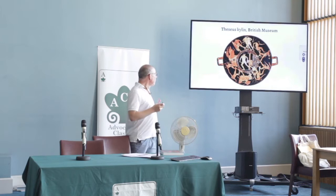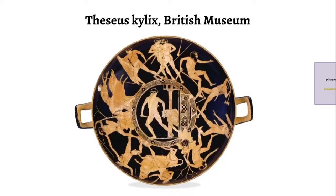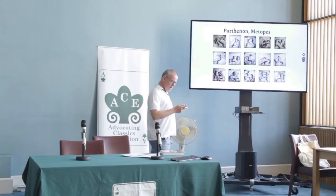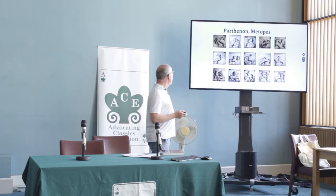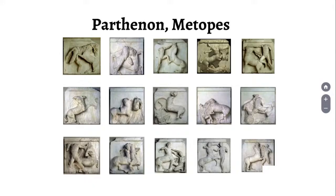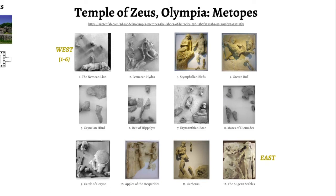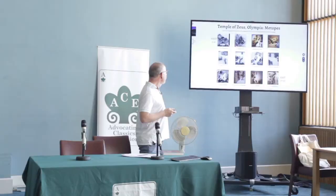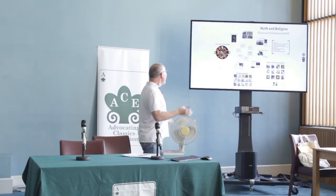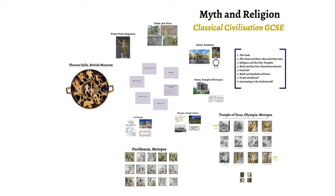There are three more visual things: this kylix showing labours of Theseus; the metopes from the Parthenon — rather fragmentary, but basically enough to see what's going on; and the metopes from the Temple of Zeus at Olympia. Some of these are so fragmentary that the idea of choosing things where you can see what's going on doesn't quite work, although it's easy to find reconstructions. That's the overall syllabus as I see it.